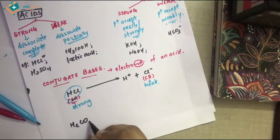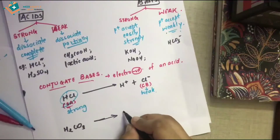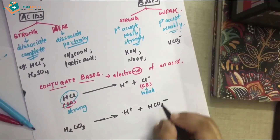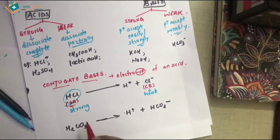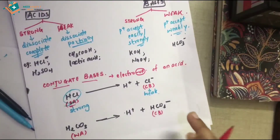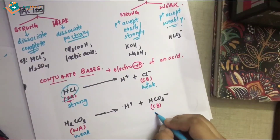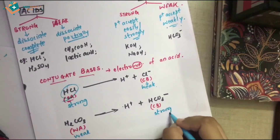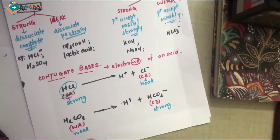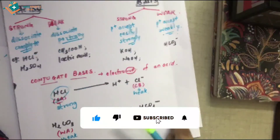Let's see one more example using carbonic acid, H₂CO₃. When it dissociates, it forms H⁺ and HCO₃⁻. H₂CO₃ is a weak acid, and HCO₃⁻ is its conjugate base. Since H₂CO₃ is a weak acid, its conjugate base is strong. The key rule is: strong acids have weak conjugate bases, and weak acids have strong conjugate bases.